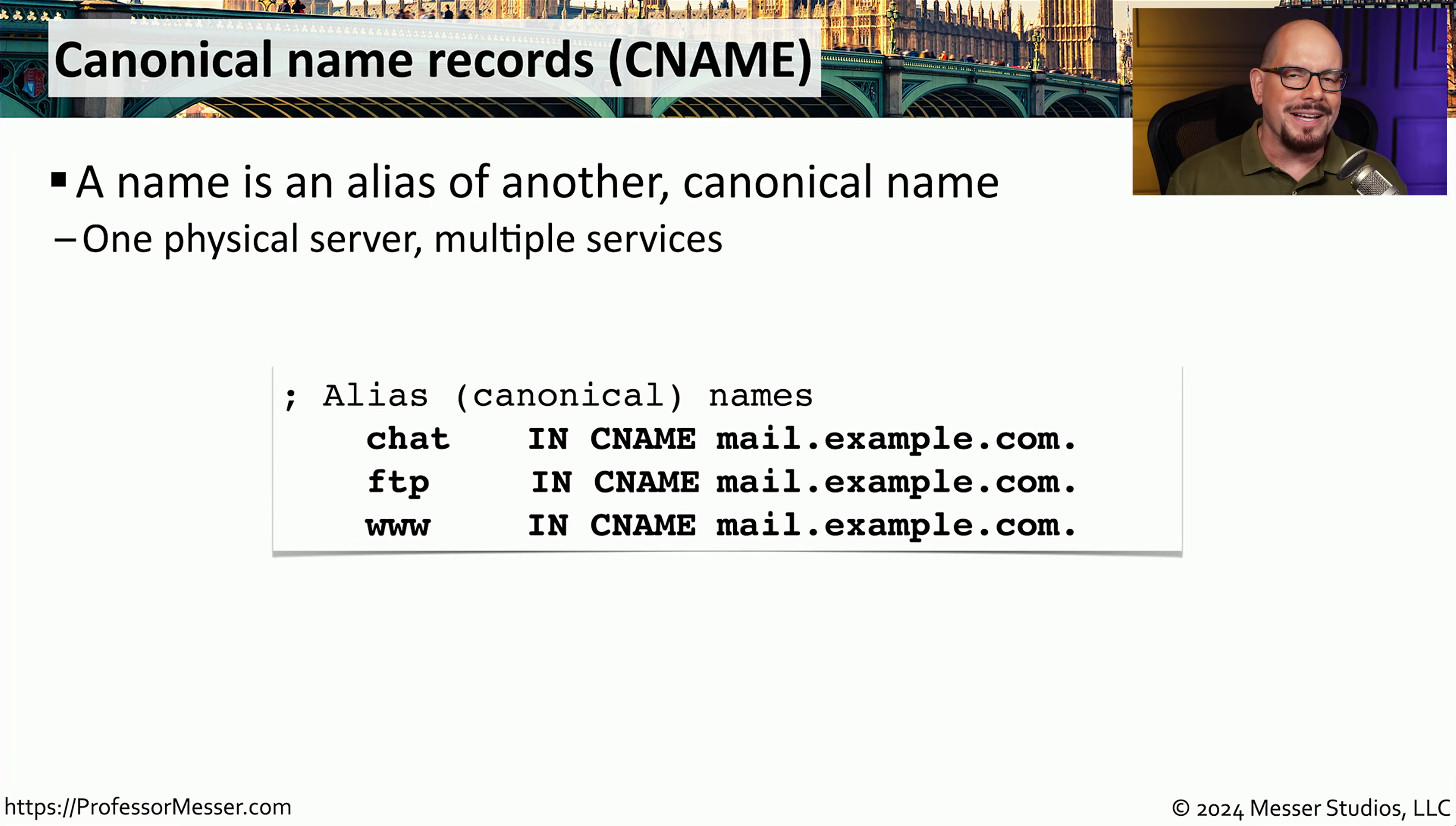Sometimes you have a single IP address that is referenced by multiple names, and we can configure this alias of names inside of our DNS server. We refer to this record type as a CNAME record. This stands for a canonical name record. For example, you might have one server such as mail.example.com, but that same server may be providing other services and may be referenced through other names. We would include those names inside of these CNAME records.